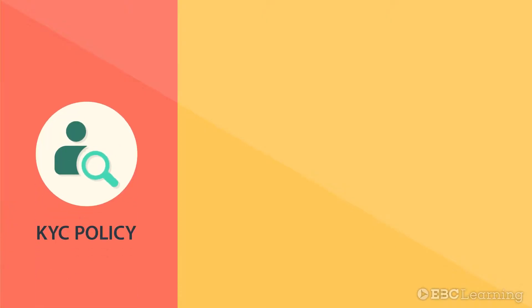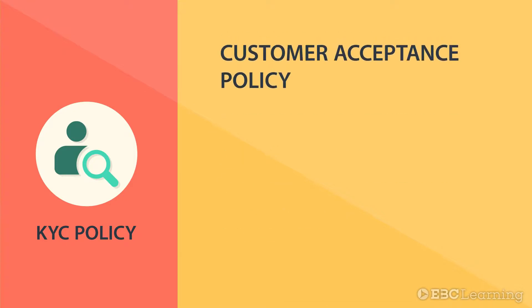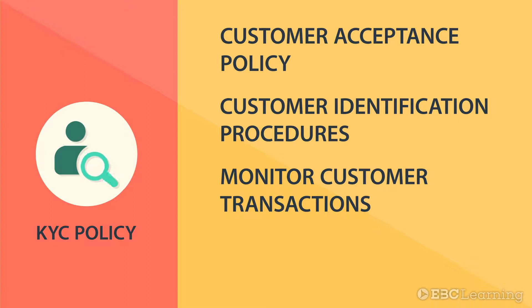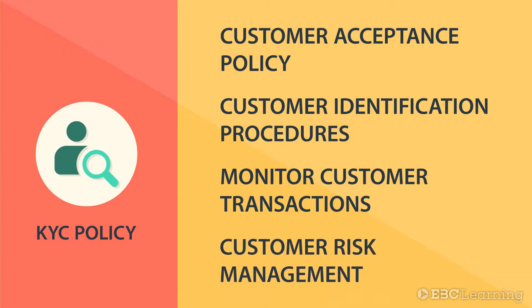Let us list them and then go into the details of each of them. They are as follows: 1. Every bank must have a customer acceptance policy. 2. They must set in place customer identification procedures. 3. They must monitor customer transactions regularly, to be able to identify and report on suspicious transactions. 4. Banks must define and manage the risk posed by each of the customers — that is, they must have a risk management policy in place.